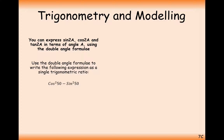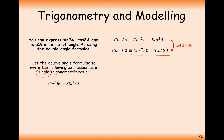Now let's answer some questions. Use the double angle formula to write the following expression as a single trigonometric expression. This looks like the cos squared minus sine squared formula, which equals cos 2a. Set a equal to 50, and the expression on the right-hand side matches, so the answer is just cos 100. So cos squared 50 minus sine squared 50 equals cos 100.